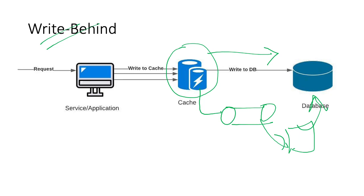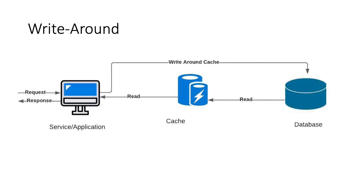Now let's talk about the write-around strategy, which is a very vanilla and straightforward strategy. Here the application writes data directly into the database without going through the cache at all. This strategy can be coupled with read-through or cache-aside strategy, and is best used when you want to read data very few times — or just once — after a write. That is the primary use case for write-around.